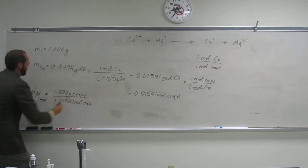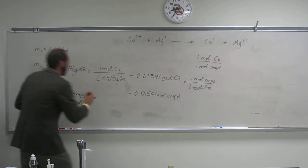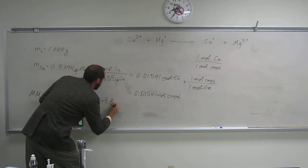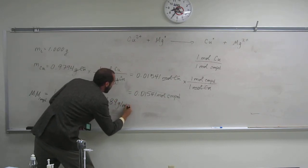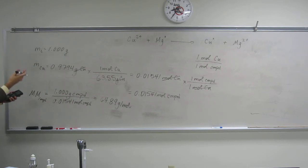So grams per mole, that's molar mass. So that's 64.89 grams per mole. Okay, so the formula weight would be 64.89 AMU.